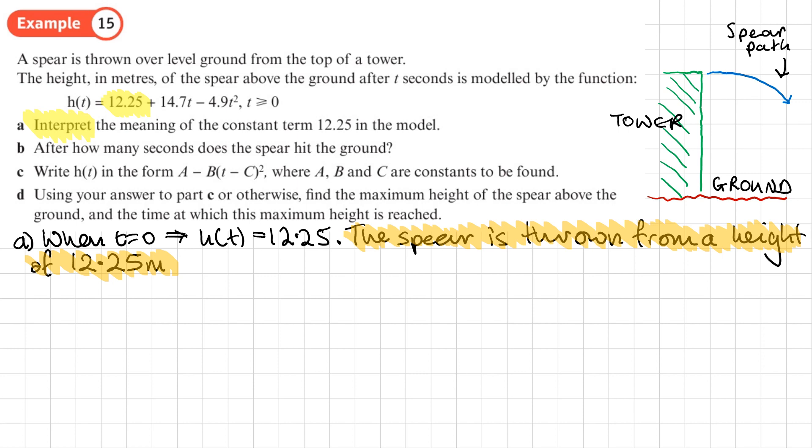Let's have a look at Part B. Part B is asking us, after how many seconds does the spear hit the ground? Well the spear is going to hit the ground, and hopefully not a person, there's no one there. Maybe it's some sort of Olympic training or something, maybe that's what Olympians do, they throw spears from top of towers, who knows. So the spear will hit the ground when its height is zero, and that's when h(t) is equal to zero.